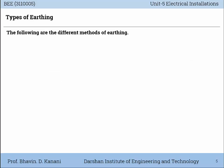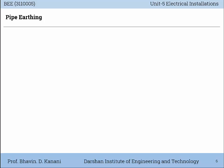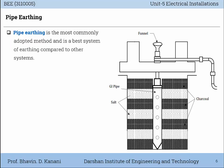There are two major types of Earthing: one is pipe Earthing and the other is plate Earthing. Now let us start with pipe Earthing in detail. Pipe Earthing is the most commonly adopted method and is the best system of Earthing compared to the other systems.